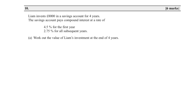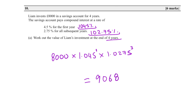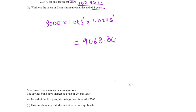Question ten: Liam invests £8,000 in a savings account for four years. The account pays compound interest at 4.5% for the first year — that's a multiplier of 1.045 — and 2.75% for the remaining three years, which is a multiplier of 1.0275. So: 8,000 × 1.045 × 1.0275³ = 9,068.84 to two decimal places.